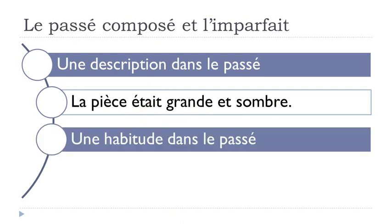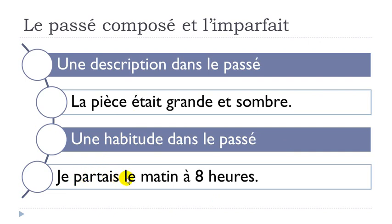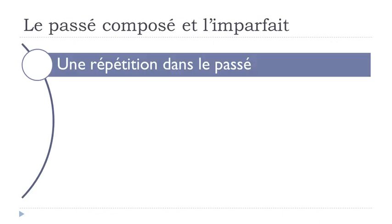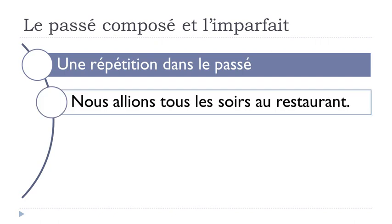The second use is une habitude — a habit or something you are used to doing. So une habitude dans le passé. The example: 'je partais le matin à 8 heures.' In that case you want to insist on the fact that it's something you tend to do every morning. Not far from this habit concept is une répétition dans le passé — something that repeats itself in the past. In that case you should use l'imparfait. The example: 'nous allions tous les soirs au restaurant' — we went to the restaurant every evening.